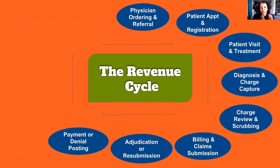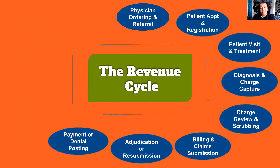You'll receive that either electronically if you're enrolled in ERAs — I will link below my other video discussing what ERAs are. It's very important that you look at getting ERAs. You will either receive that electronically or you will receive a paper remittance or paper EOB. I recommend that if you have ERAs, you have those transmitting directly to your clearinghouse.